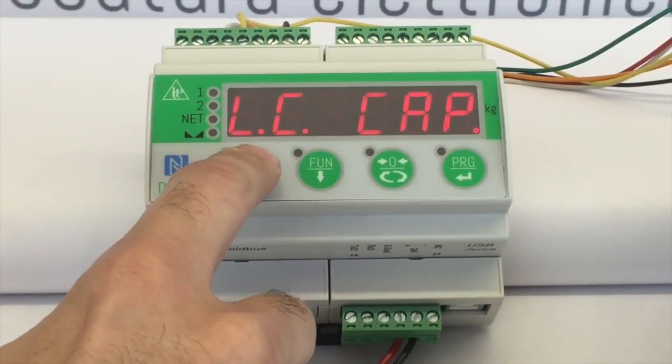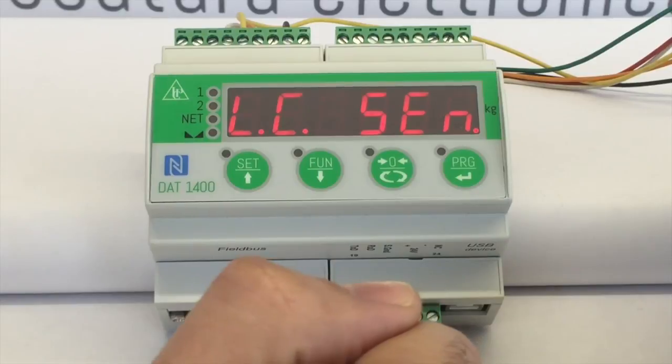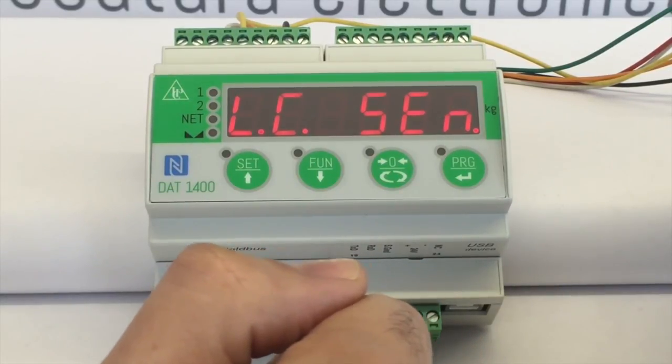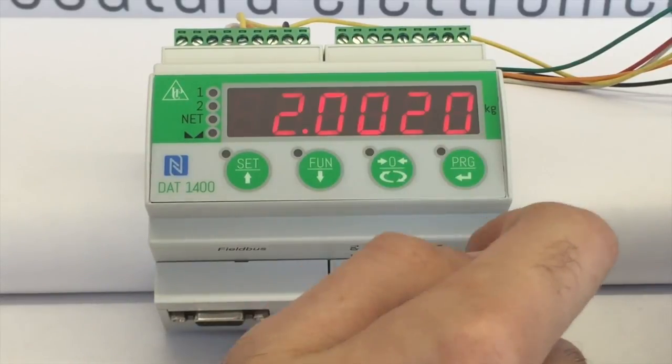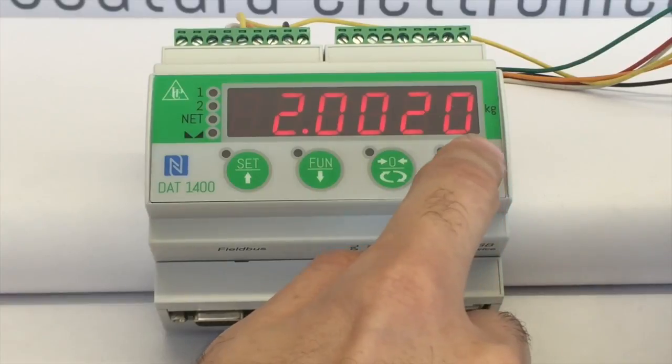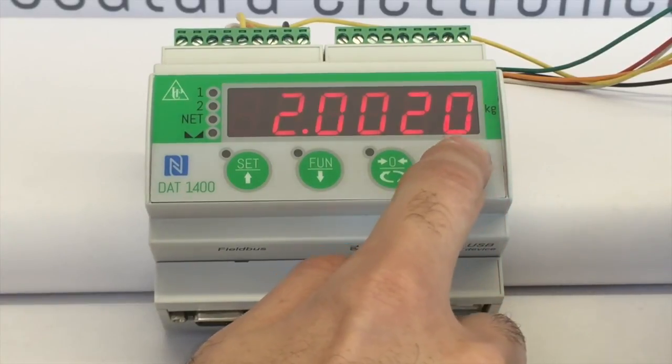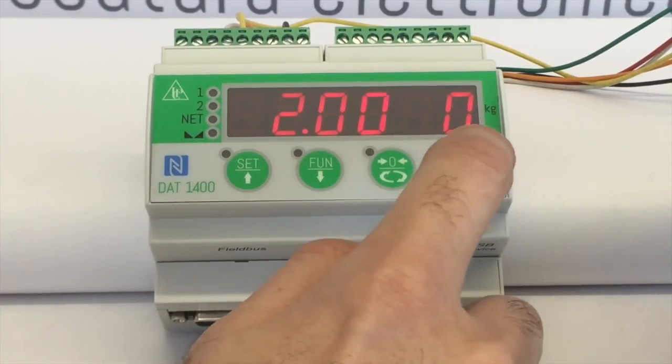Then set the next parameters by pressing SET. LC SENSE is the average sensitivity of the load cells. Again, open with PRG, set the digit to modify with PRG and increase or decrease with SET and FAN. Press PRG to confirm.